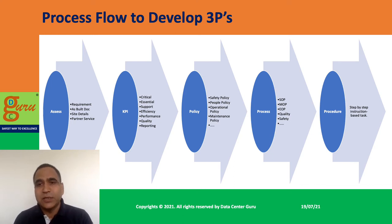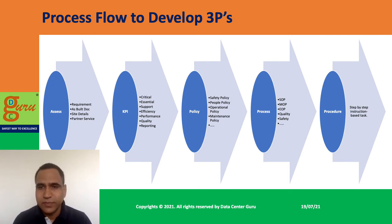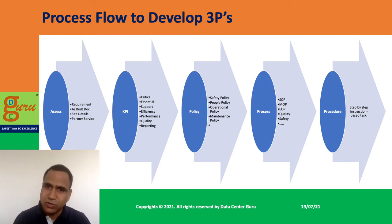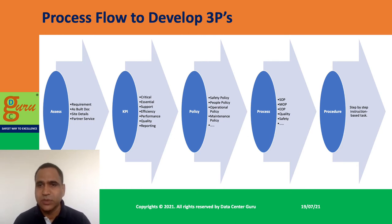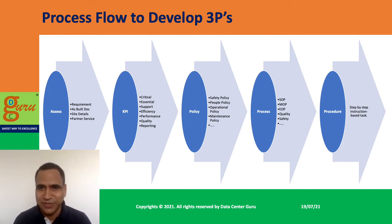MOP — Method of Procedure — is used for maintenance. When you want to maintain any system, you write out how to follow those procedures. This is applicable for all systems and subsystems that need to be maintained. You also define the frequency, which is covered clearly in the maintenance policy.